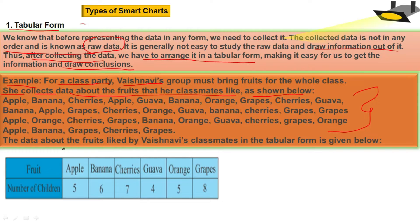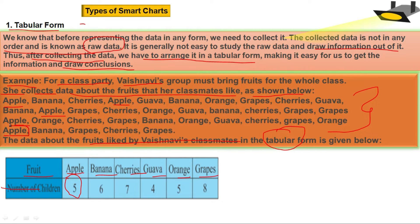The data about the fruits liked by Vaishnavi's classmates is shown in tabular form. Here you see the number of students against each fruit: Apple, Banana, Cherries, Kova, Orange, Grapes. You can find 5 students like apple. Likewise, you can count and write how many students like banana and cherries. If you put it in tabular form, it is easy for us to get the full information and come to a conclusion.